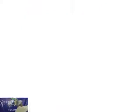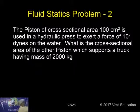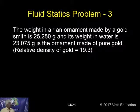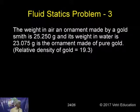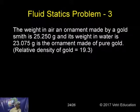Next important problem: The weight in air of an ornament made by a goldsmith is 25.250 grams, and its weight in water is 23.075 grams. Is the ornament made of pure gold? The relative density of gold is given as 19.3.